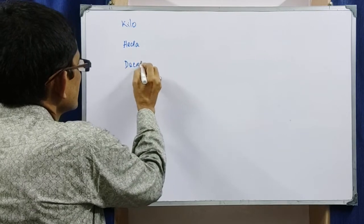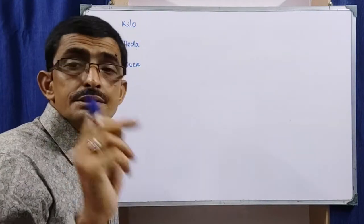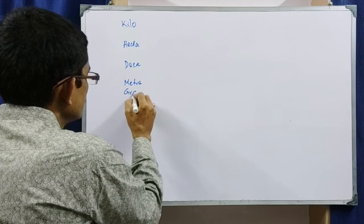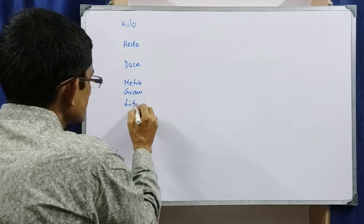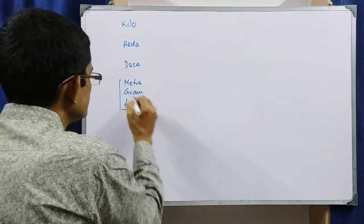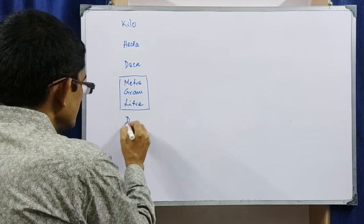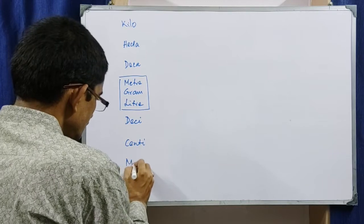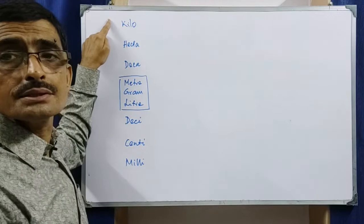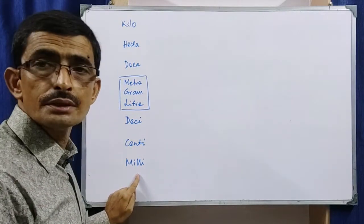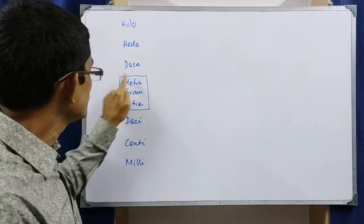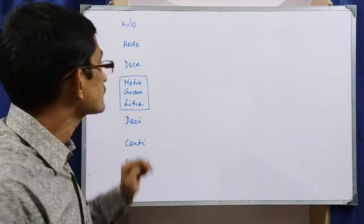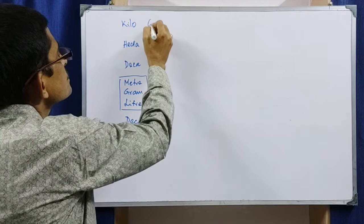Let us write these prefixes. You can use any of these three physical quantities: meter, gram, or liter. The prefixes are: kilo, hecto, deca — then the base unit — then deci, centi, milli. Kilo is the biggest part and milli is the smallest part, applicable to meter, gram, or liter.